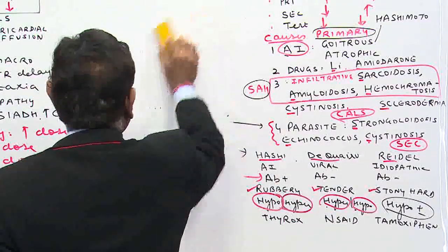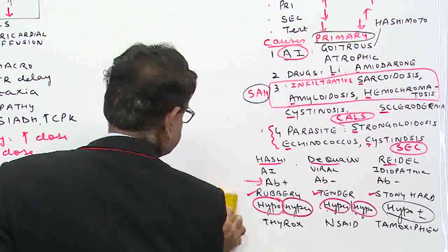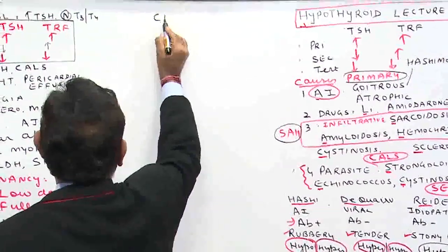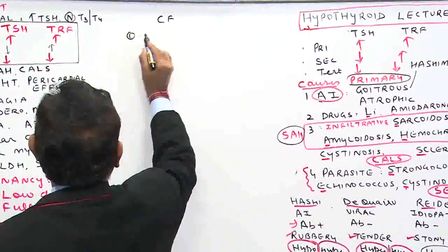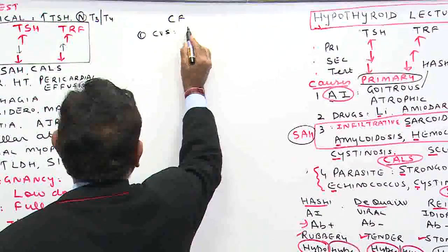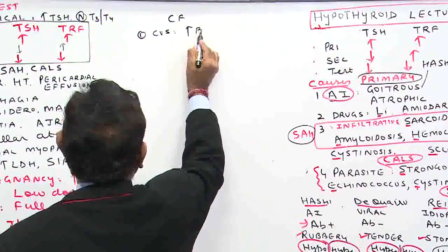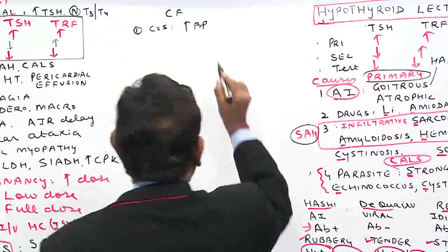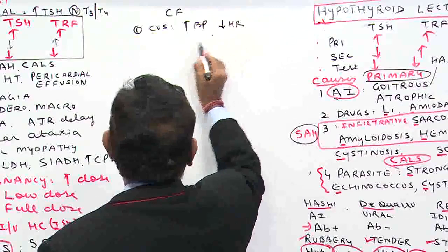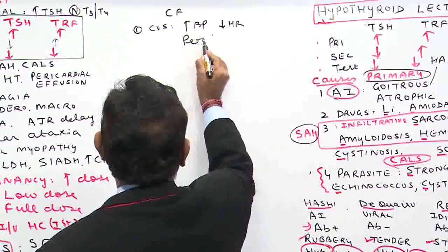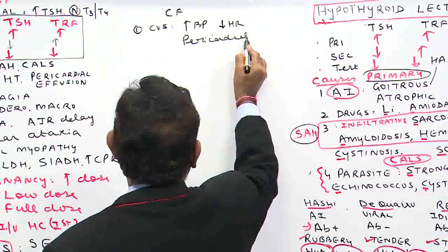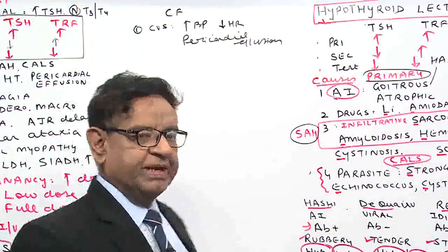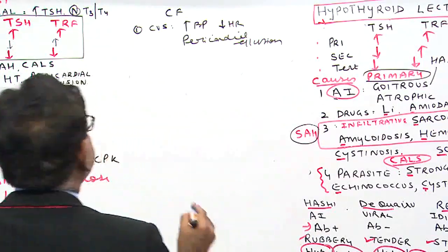Now let us talk about the clinical features of hypothyroid. In the CVS, you get increased BP — both systolic and diastolic — you get bradycardia, and you can get pericardial effusion or even pericarditis.